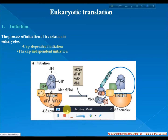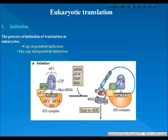The best-studied example of cap-independent initiation in eukaryotes is the internal ribosome entry site, or IRES, approach. What differentiates cap-independent translation from cap-dependent translation is that cap-independent translation does not require the ribosome to start scanning from the 5' end of the mRNA cap until the start codon.